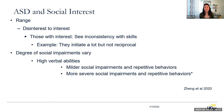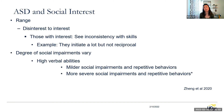For milder cases, with social interest we see a range from disinterest to interest. Those with ASD who have social interest show inconsistency with skills — they may initiate a lot because it's self-directed, but they are not reciprocal. That's what we often see in milder cases or older children. Even a child with high verbal abilities can have milder social impairments and repetitive behaviors, while others with high verbal abilities actually have more severe social impairments and repetitive behaviors despite intact cognitive abilities.